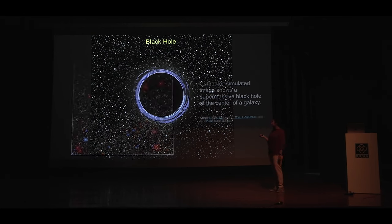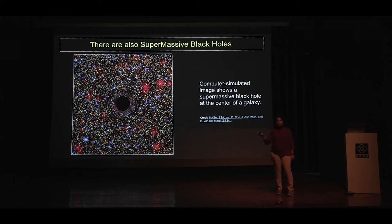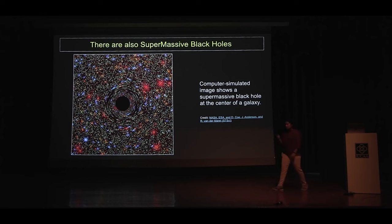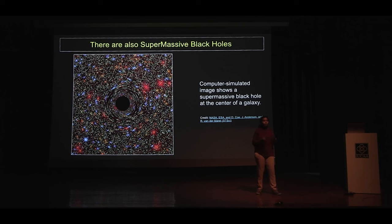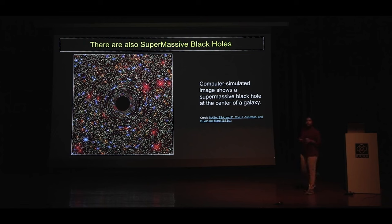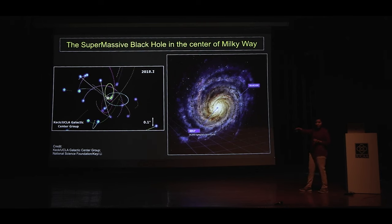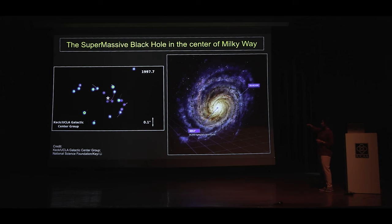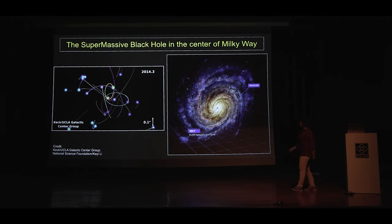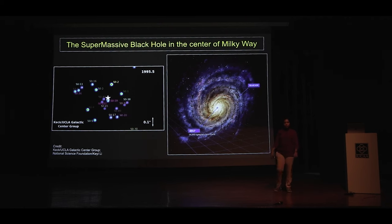So far we were talking about black holes that come from stars — stellar mass black holes. The maximum mass of those kinds of black holes can be about 100 solar masses. But scientists have found another kind: supermassive black holes with mass about hundreds of thousands to billions of solar masses. These huge black holes are found in the center of each galaxy. There is one also in the center of our galaxy, the Milky Way — about 26,000 light years from us — called Sagittarius A*.